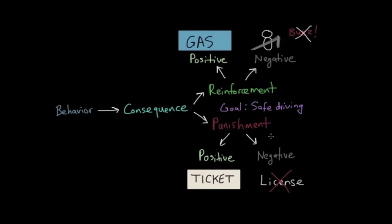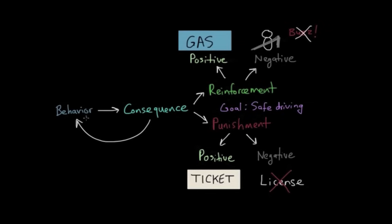So these are the four types of consequences: positive reinforcement, negative reinforcement, positive punishment, and negative punishment. One last thing to note is that all of these have a reciprocal relationship — all of these consequences influence and shape the behavior. That's what makes operant conditioning unique: this reciprocal relationship between behavior and consequences, and how behaviors are all influenced by their consequences.